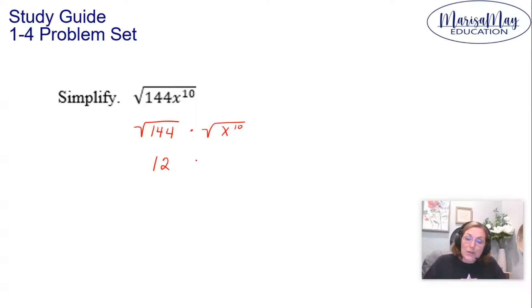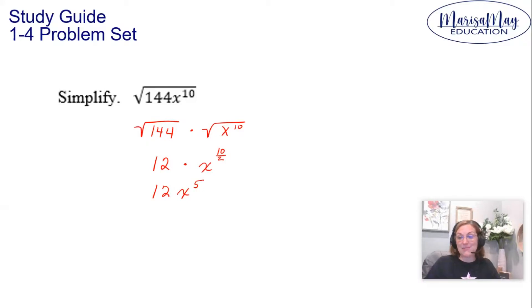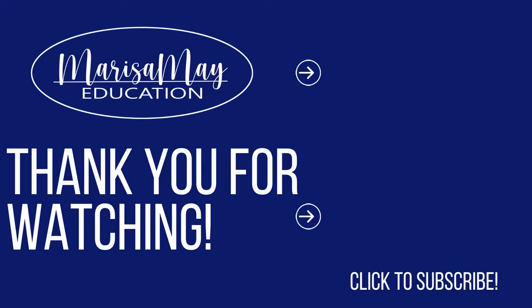Now, in order to do the square root of x to the 10th, I want you to take the exponent 10 and divide it by 2 — we're dividing by 2 for the square root. That leaves me with 12x to the 5th as my final answer.